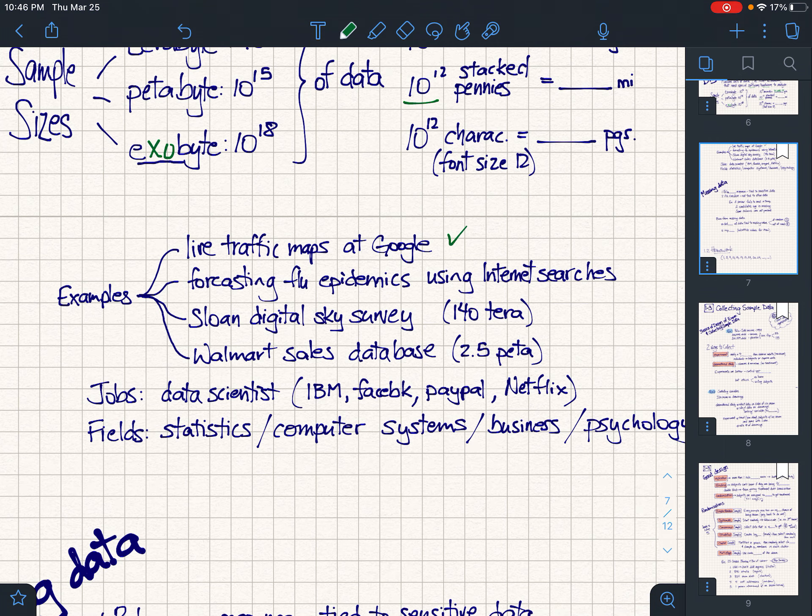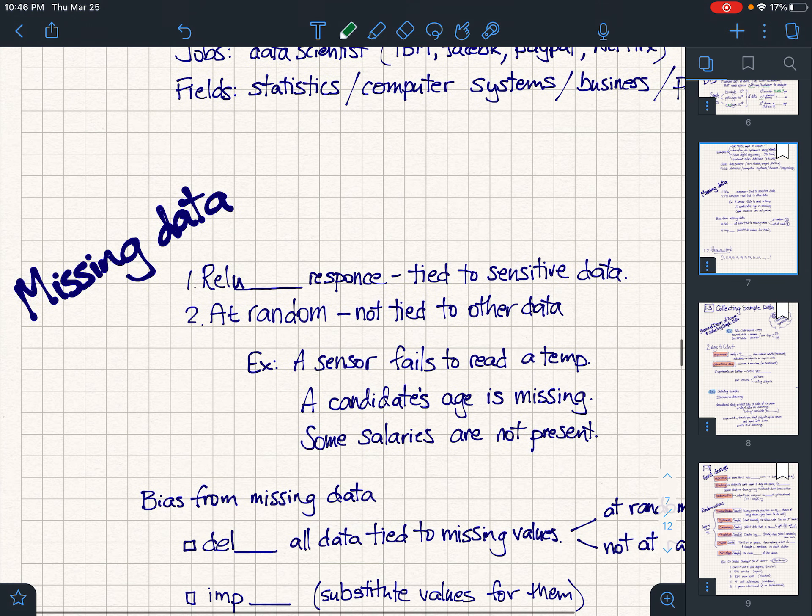Google, Microsoft, Walmart, forecasting nuclear explosions, determining internet searches or flu epidemics—these are all examples of terabytes. Last thing for this unit: missing data.